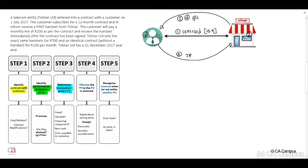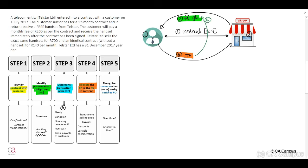There are four important aspects that we will look at during our lecture. Step four, we need to allocate the transaction price to the performance obligation in the contract. This will be based on our standalone selling price. Your standalone selling price will comply with our IFRS 13 fair value measurement principles — it has to be a price in an observable market with similar terms and conditions under similar circumstances.